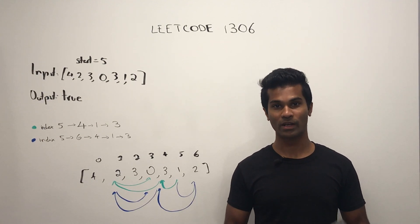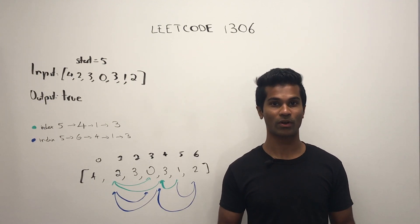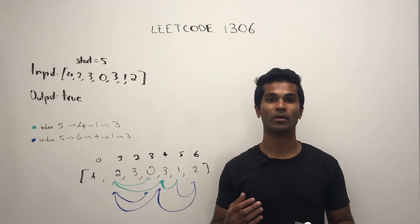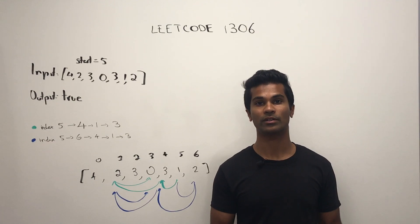The input is going to be an array of integers and an index start, and the output needs to be a boolean true or false whether we can jump to a spot in the array whose value is equal to zero.